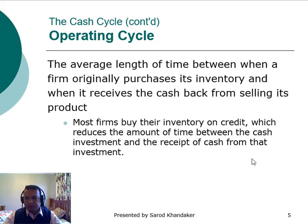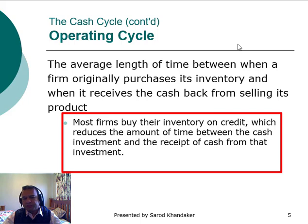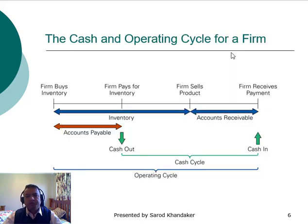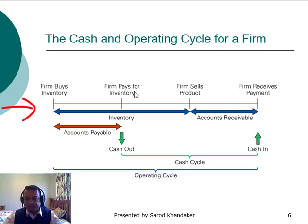What is the operating cycle? The operating cycle is the average length of time between when a firm originally purchases its inventory and when it receives cash from selling its product. Most firms buy their inventory on credit, which reduces the amount of time between the cash investment and the receipt of cash. This slide explains the operating cycle: first the firm buys the inventory, then the firm pays for the inventory, third the firm sells the product, and then the firm receives payment for its sales.